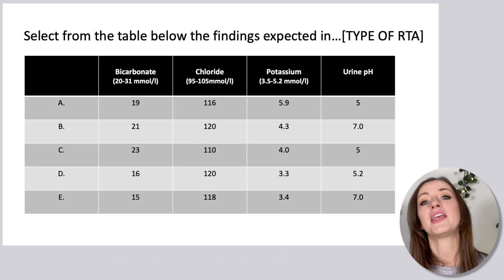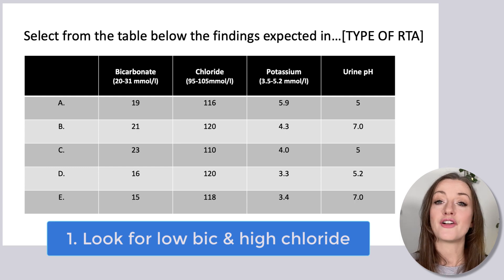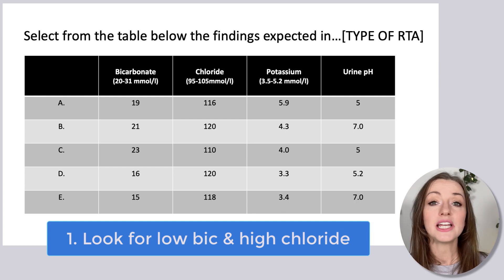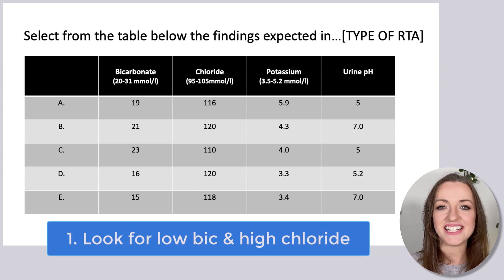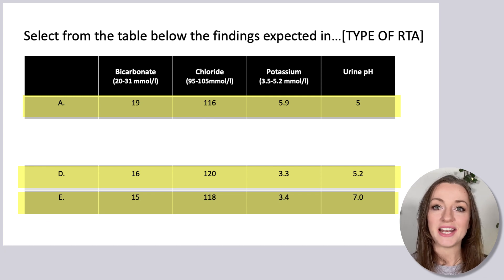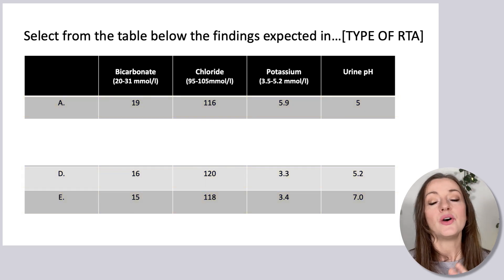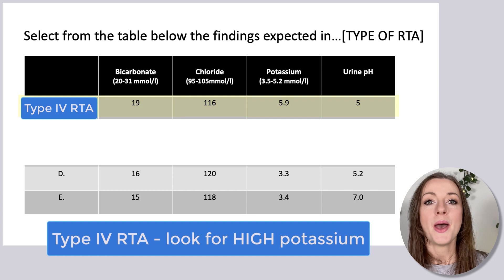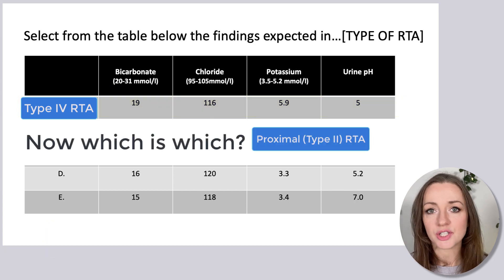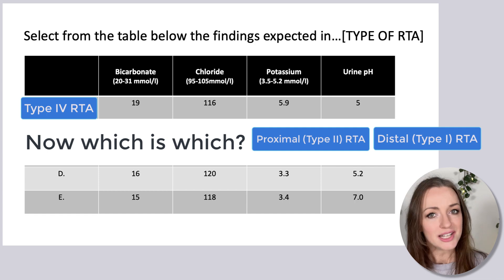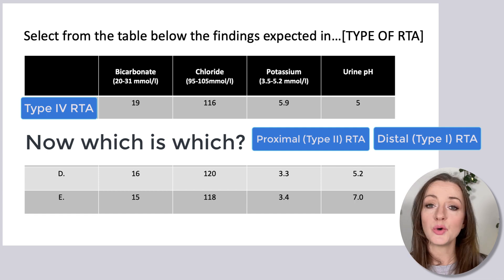Coming to this table — if we want to look for an RTA, we must first look for a hyperchloremic acidosis, otherwise known as metabolic acidosis with a normal anion gap. So we're looking for a low bicarb and a high chloride, which lets us zoom in quickly to the relevant rows. If it's a type 4 or hyperkalemic RTA, it would be this one — too easy. But now we have two remaining options: proximal or type 2 RTA, and distal type 1 RTA. Because aldosterone is still working in both, we're going to have low potassium in both — so the potassium does not help us here.